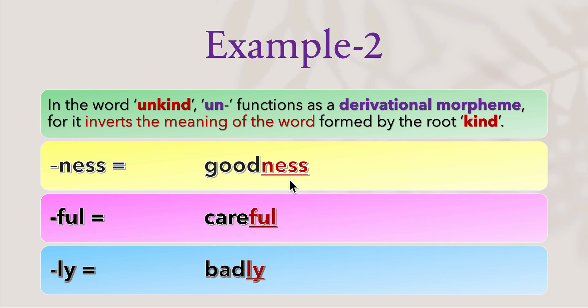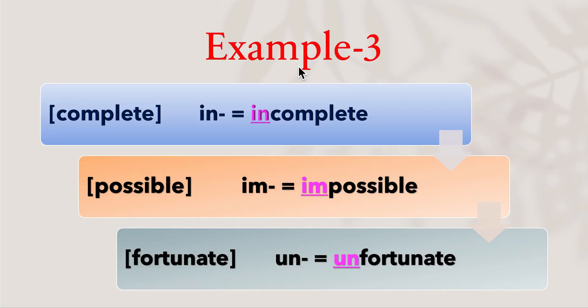Goodness: '-ness' is a derivational morpheme. Careful: '-ful' is a derivational morpheme. Badly: '-ly' is a derivational morpheme. Example three: Incomplete: 'in-' is a derivational morpheme. Impossible: 'im-' is a derivational morpheme.